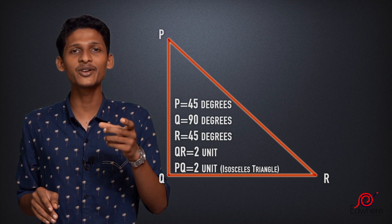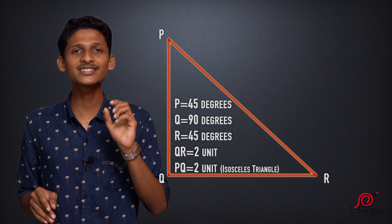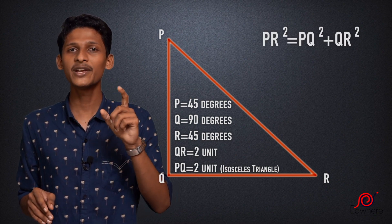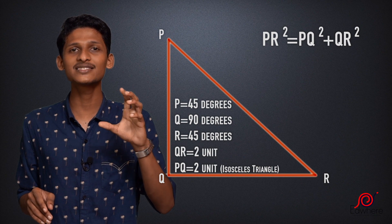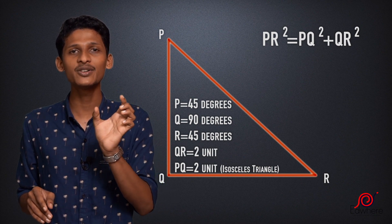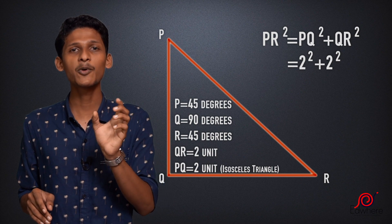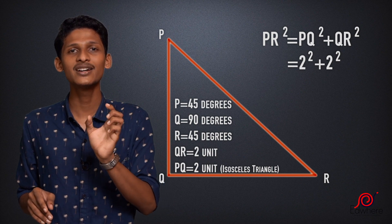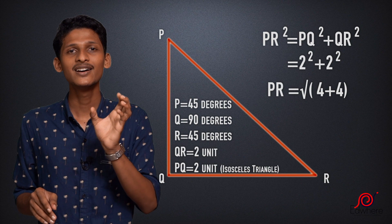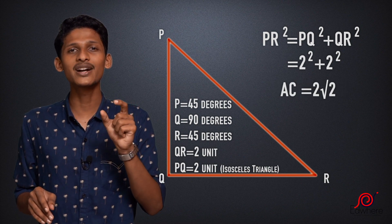Now we have to find the side PR using the Pythagorean theorem. PR square equals PQ square plus QR square. PR square equals 2 square plus 2 square. PR equals the square root of 4 plus 4, that is root 8, which is 2 root 2. So the length of PR is 2 root 2.